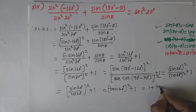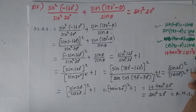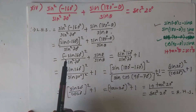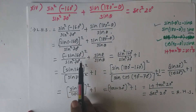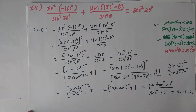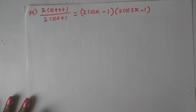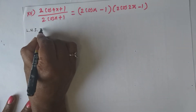We used only the formula cos2θ = 2cos²θ - 1 and the difference of squares factorization. It is very simple.